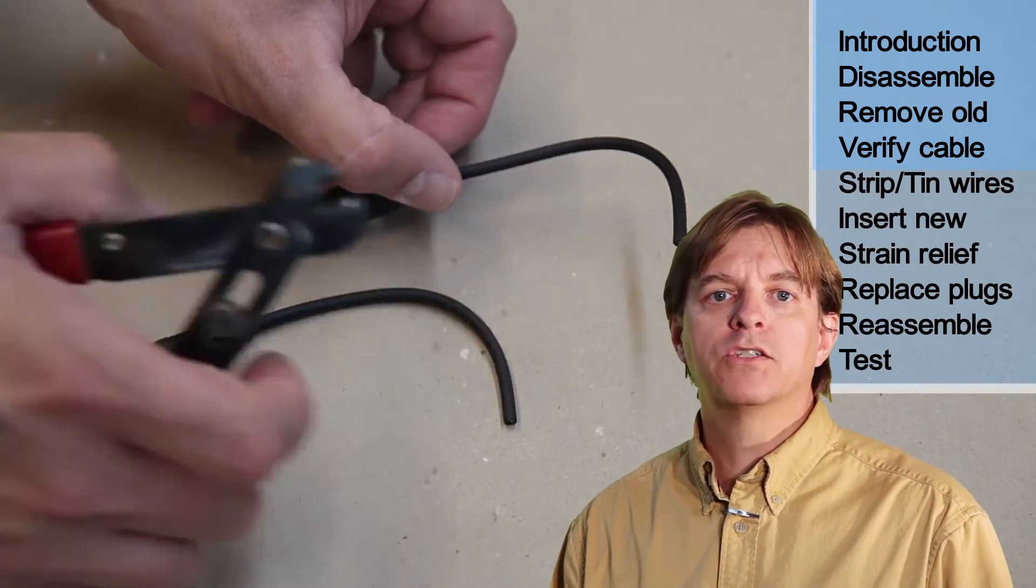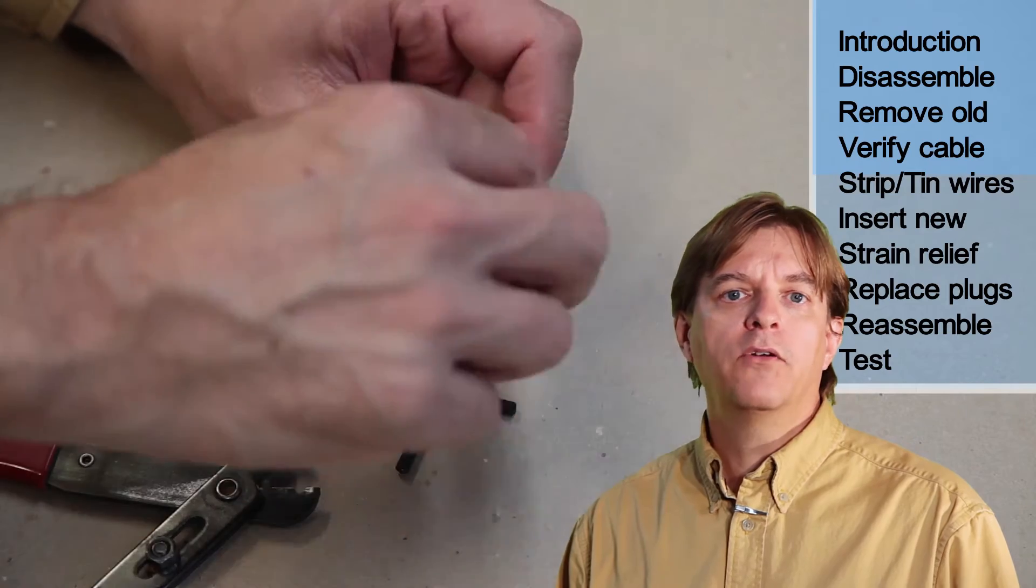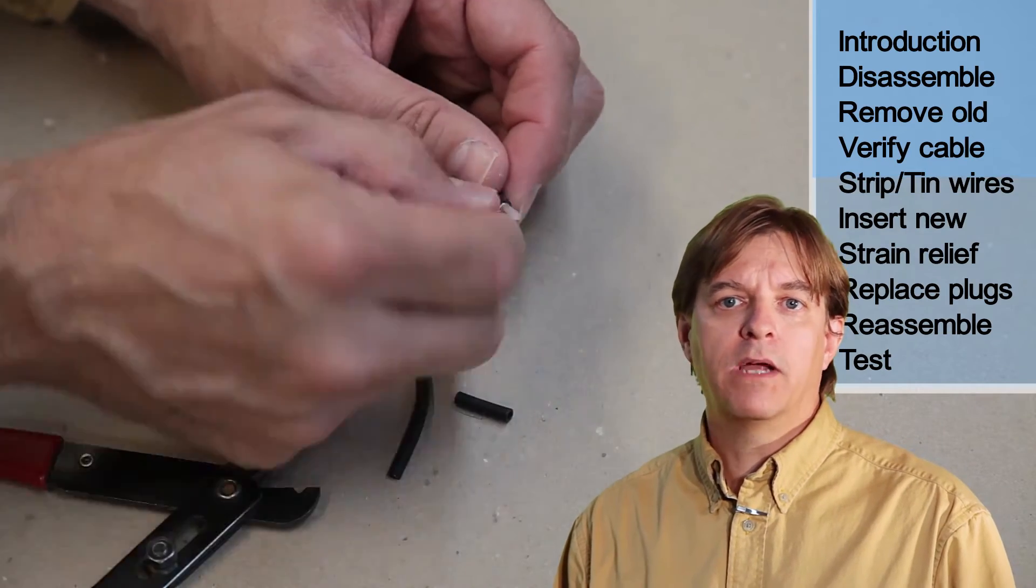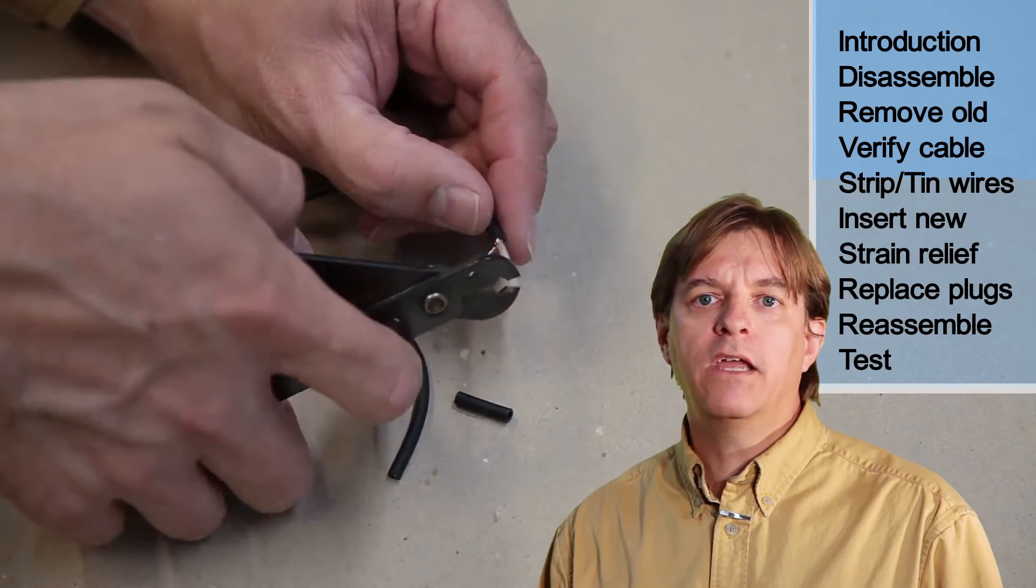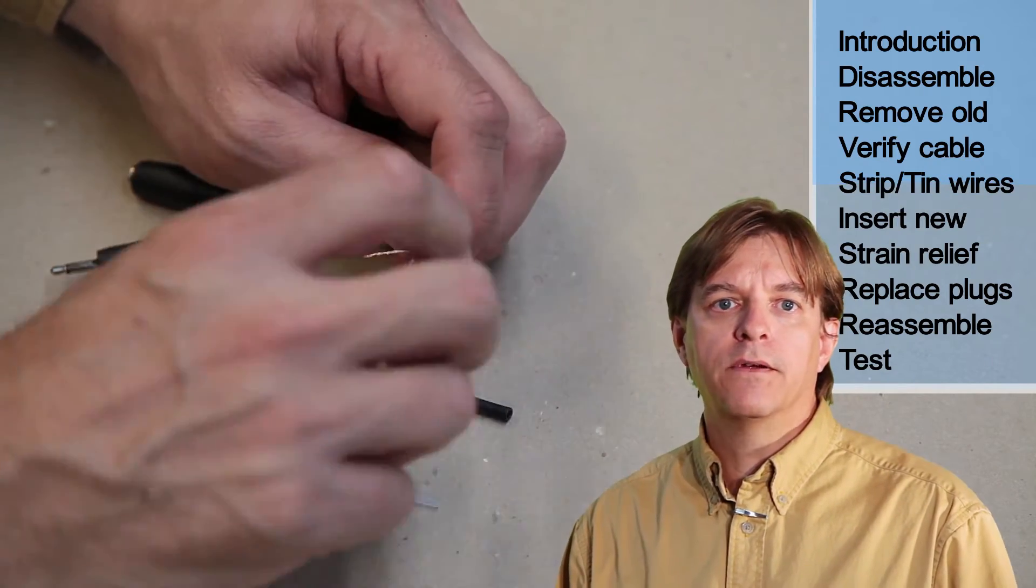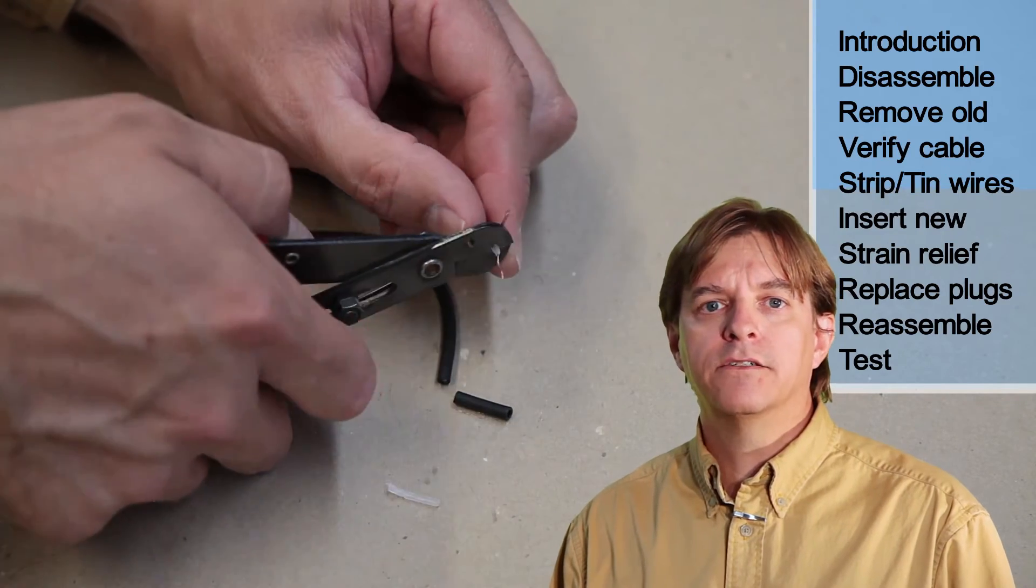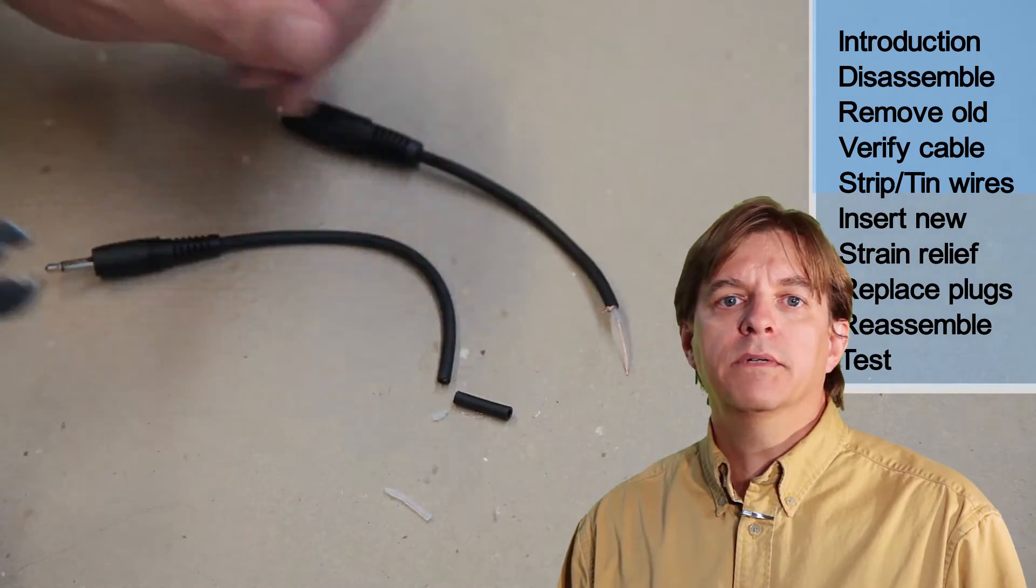Then, using some wire strippers, I'll carefully remove the insulation. With audio cables, the outside conductor is wrapped around the inside one. So after taking off the outside insulation, the wires first need to be gathered together and twisted. Then the insulation can be taken off the inside conductor. And then the other end gets the same treatment.